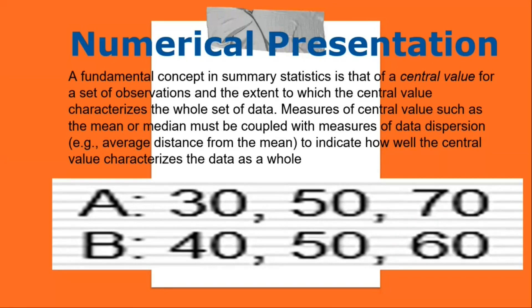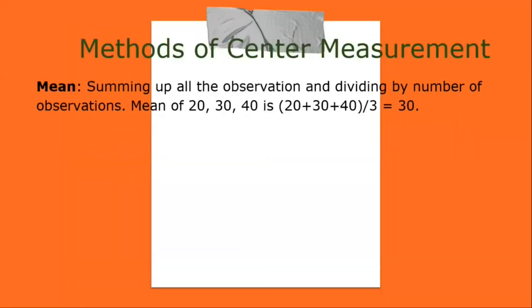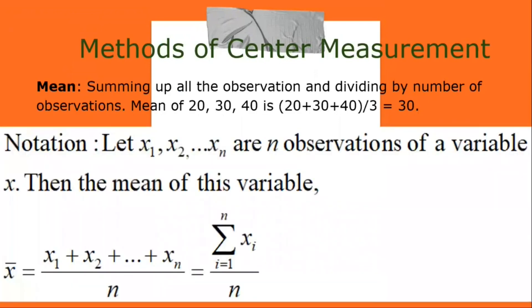Commonly used methods are mean, median, mode, geometric mean, etc. Mean: summing up all the observations and dividing by the number of observations. The mean of 20, 30, 40 is (20 + 30 + 40) / 3 = 30. In general, if x1, x2, ..., xn are observations of a variable x, then the mean is (x1 + x2 + ... + xn) / n.